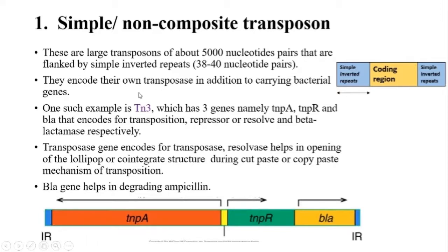One example of a simple transposon is Tn3. This transposon contains three genes: TNPA, TNPR, and the Bla gene. TNPA encodes for transposase, which helps in movement of this transposon. TNPR encodes for resolvase, which helps in the opening of the cointegrate structure during cut-paste or copy-based mechanism of transposition. The third gene, Bla, encodes for beta-lactamase, which degrades ampicillin and makes the cell resistant to ampicillin.